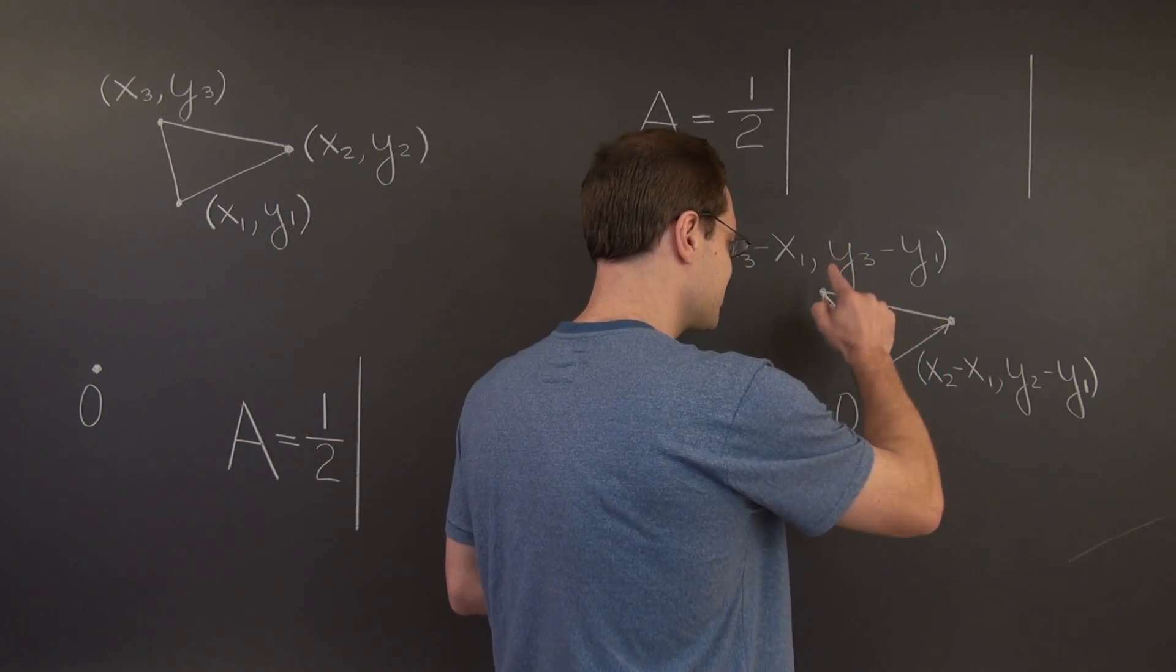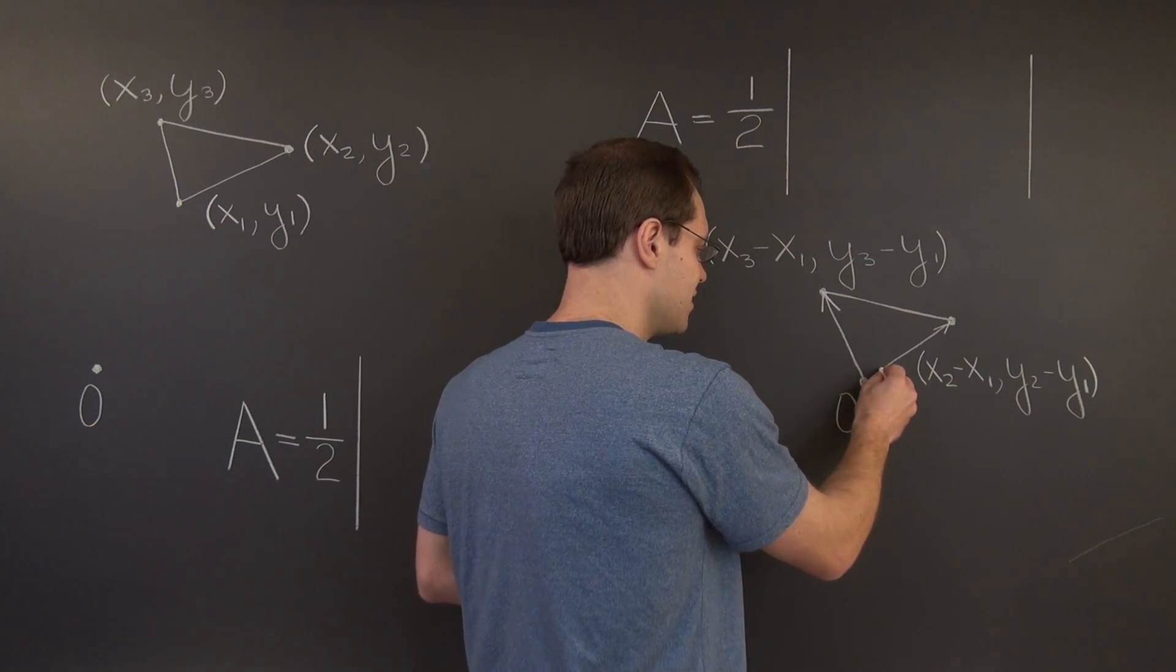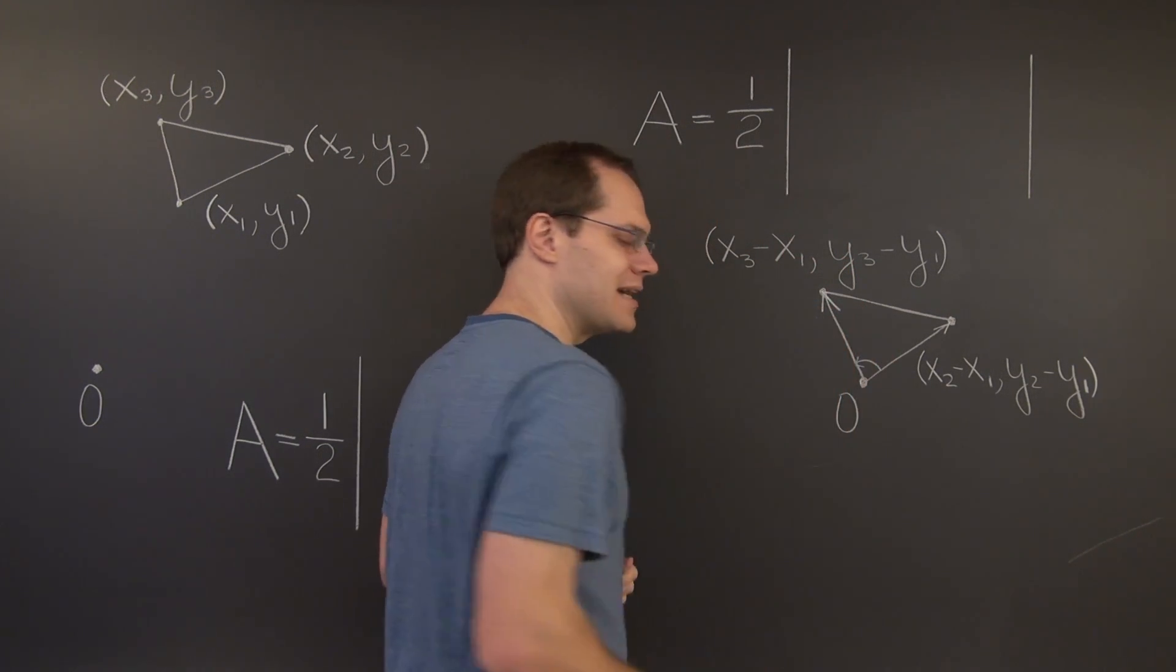And again, we agree that this vector is first, and this vector is second, so that the area comes out positive.